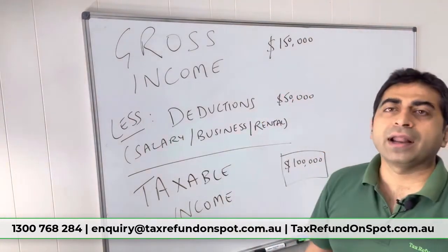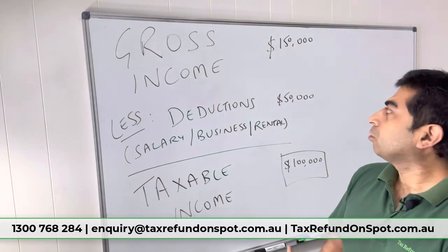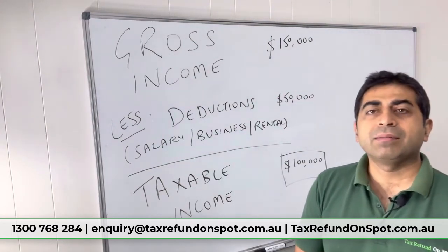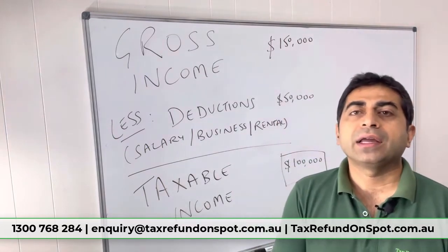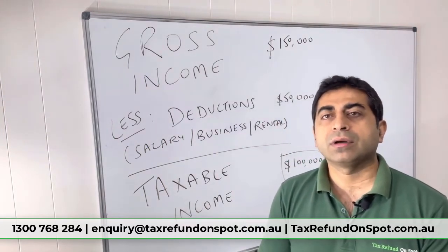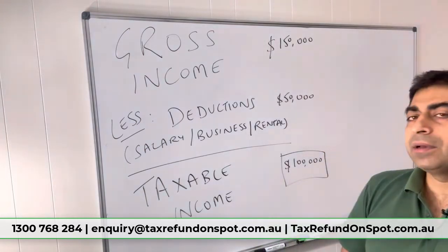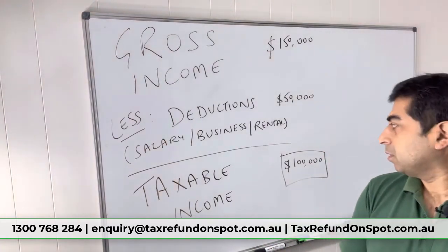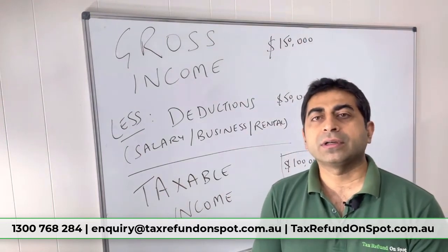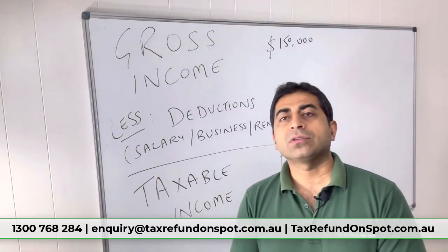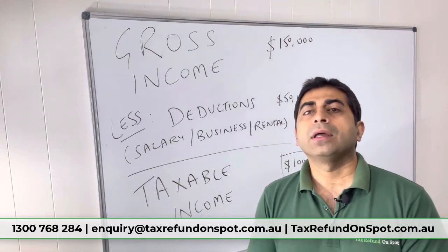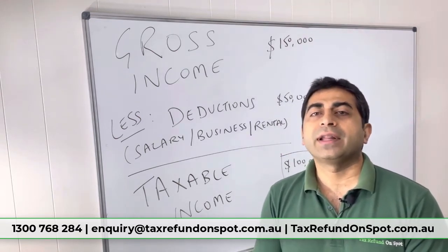In this example, gross income is $150,000 and total deductions are $50,000. Taxable income is derived by deducting the deductions from gross income, so the taxable income is $100,000. You will pay tax not on gross income but on the taxable income, which is $100,000.